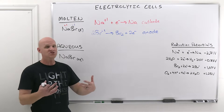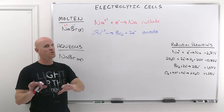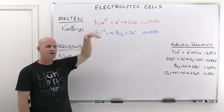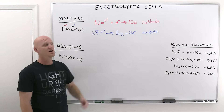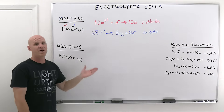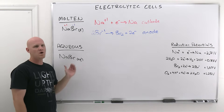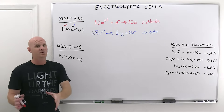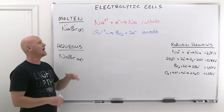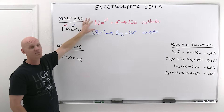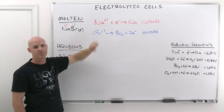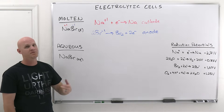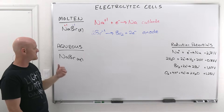Predicting the products is super straightforward for molten electrolysis. It's a little more difficult in practice because you have to heat it to super elevated temperatures. Aqueous electrolysis is easier to do in practice — as long as it dissolves in water, you can do this at room temperature — but predicting the products is much more of a pain.